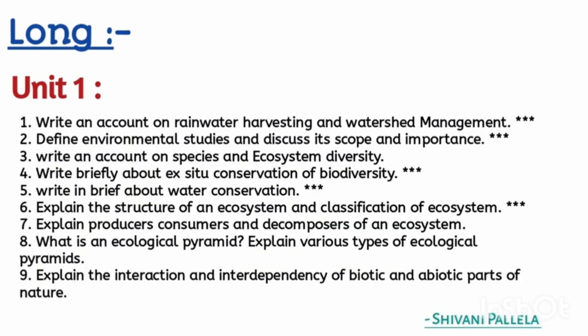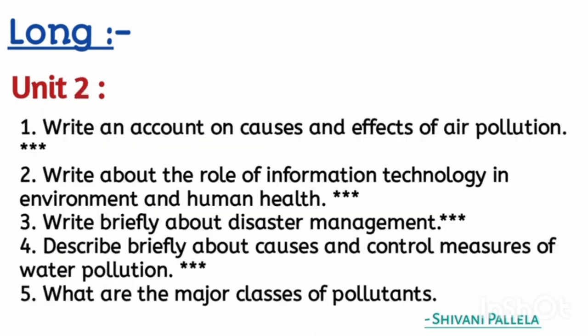If you learn these eight questions, you can score 10 marks in Part A. Just understand the concept and write the remaining answer in your own words. Try to draw flow charts as well. For long answers, from unit one: rainwater harvesting and watershed management is the first important question, scope and importance of environmental studies is the second, and classification of ecosystem is the third. From unit two: information technology and human health, water pollution causes and control measures, and causes and effects of air pollution are important, along with disaster management.